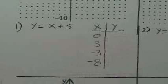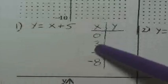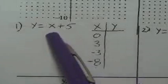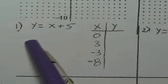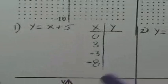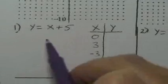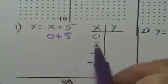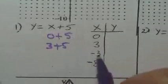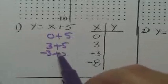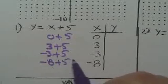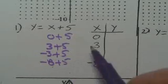Let me help you get started on the first one. I already gave you the numbers for x, and then you want to plug them in and get a value for y. So for example, if I put 0 for x, if I put 3 for x, if I put negative 3 for x, and if I put negative 8 for x — what do you end up with?